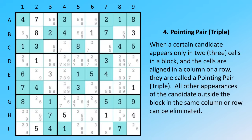When a certain candidate appears only in two or three cells in a block, and the cells are aligned in a column or a row, they are called a pointing pair, or triple.